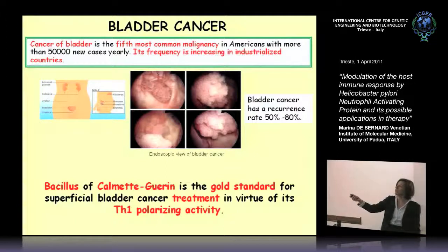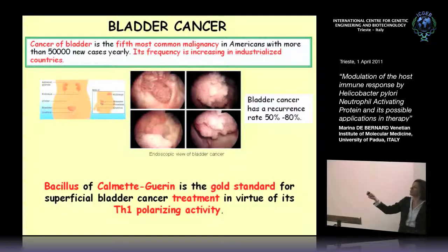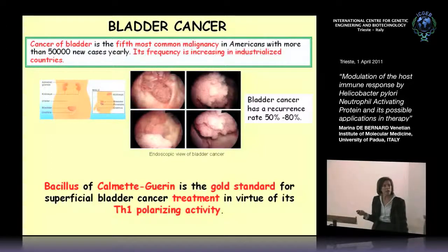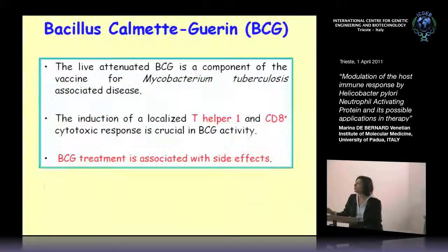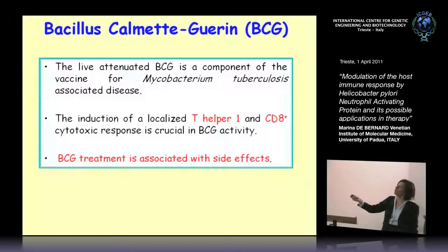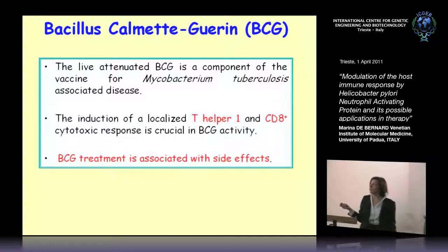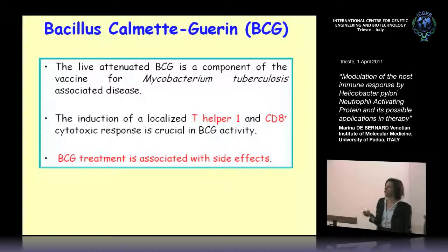Bladder cancer is the fifth most common malignancy in Americans with more than 50,000 new cases yearly, and its frequency is increasing in industrialized countries. The bacillus Calmette-Guérin is the gold standard for superficial bladder cancer treatment in virtue of its Th1 polarizing activity — the same activity as HPNAP. BCG is a live attenuated component of the vaccine for mycobacterium tuberculosis associated disease, and induction of a localized Th1 and CD8 cytotoxic response is crucial in BCG activity. However, BCG treatment is associated with several side effects, so a new therapeutic approach is required.